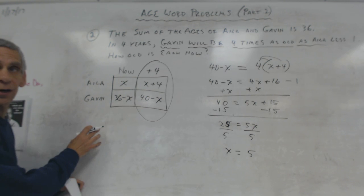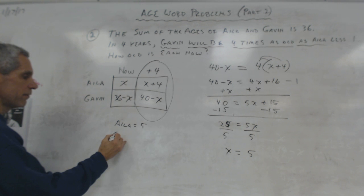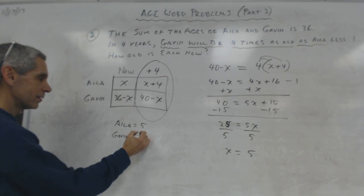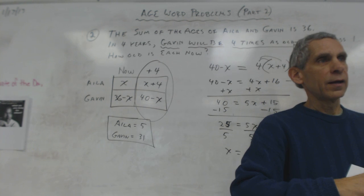Back here, I say Isla is 5 and Gavin is 36 minus 5, which is 31. Gavin, you're an old man.